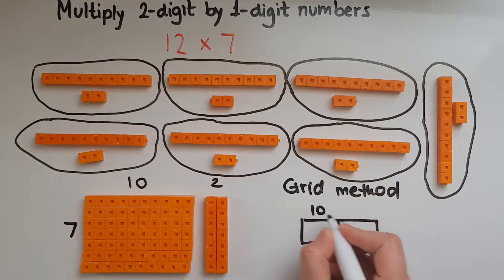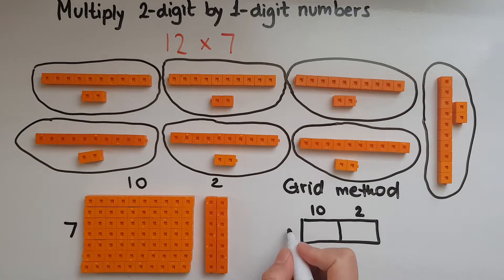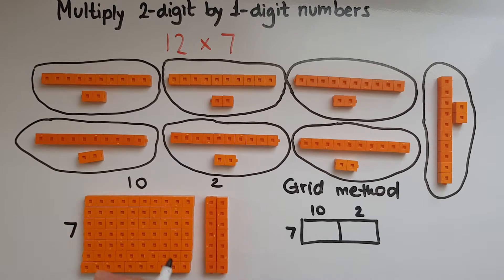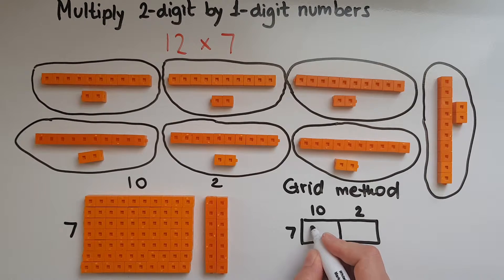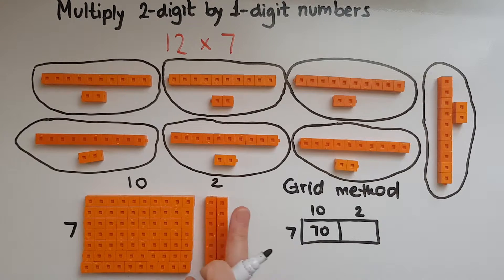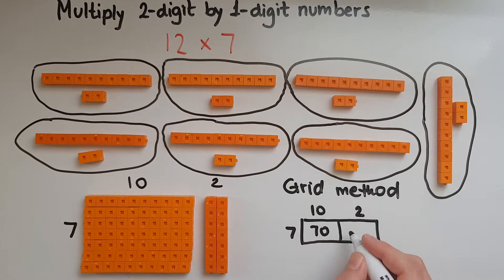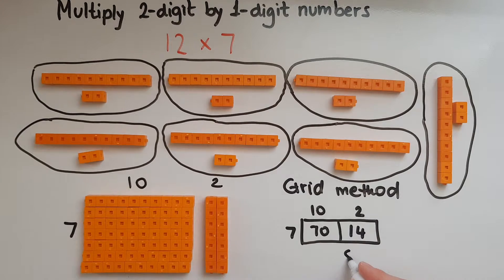So I've got 10 and 2, and I've got 7. I've got 7 lots of 10 — 7 rows of 10 each — which is easy to work out: 10, 20, 30, 40, 50, 60, 70. So 7 times 10 is 70. Then I've got 7 rows of 2 as well, which is 14. So 7 times 12 gives me 70 and 14, which is 84.